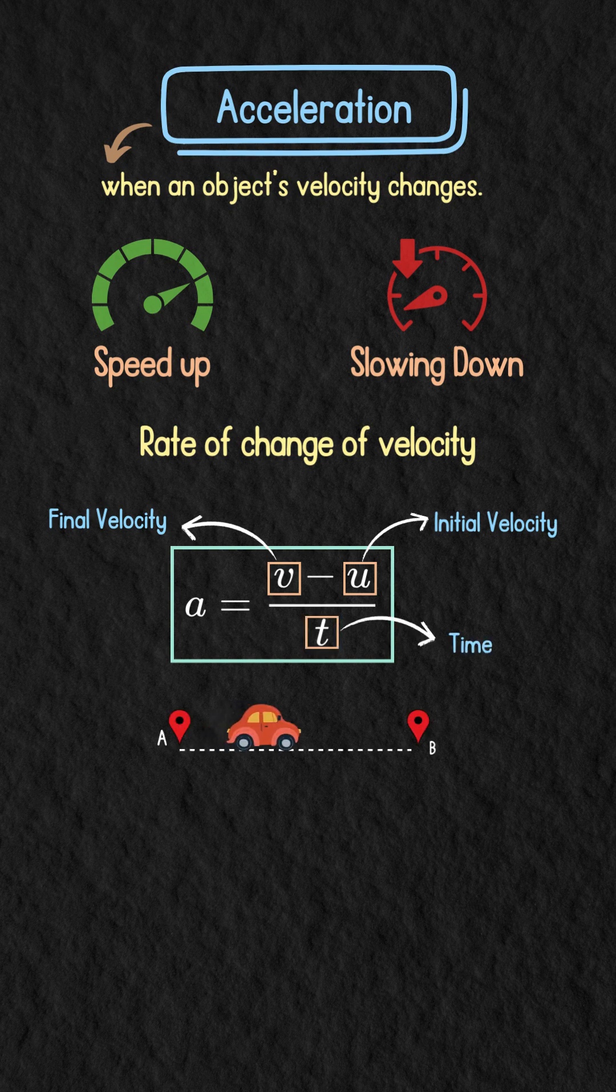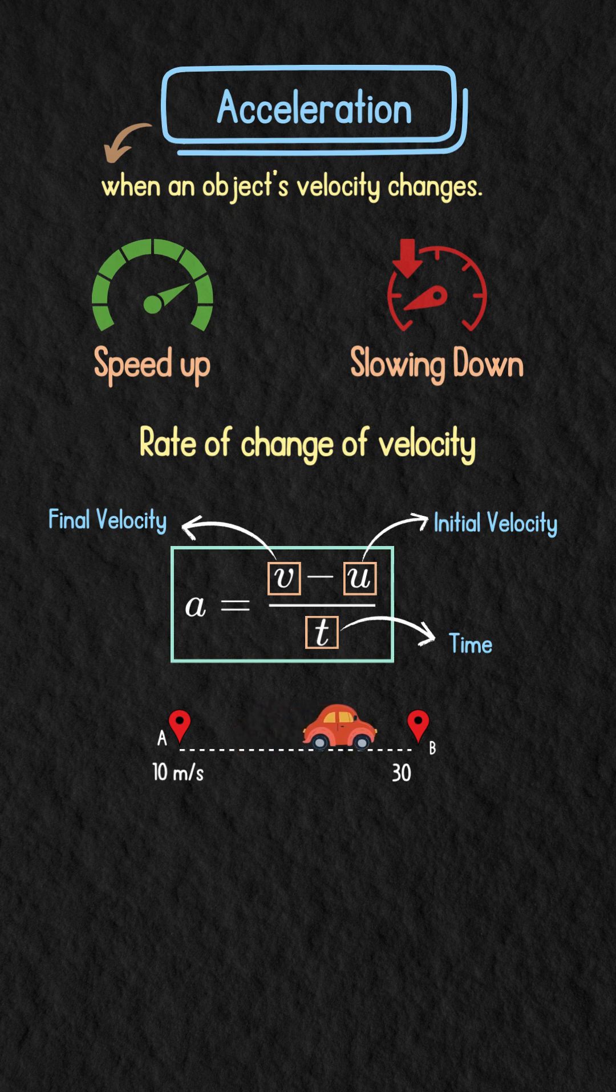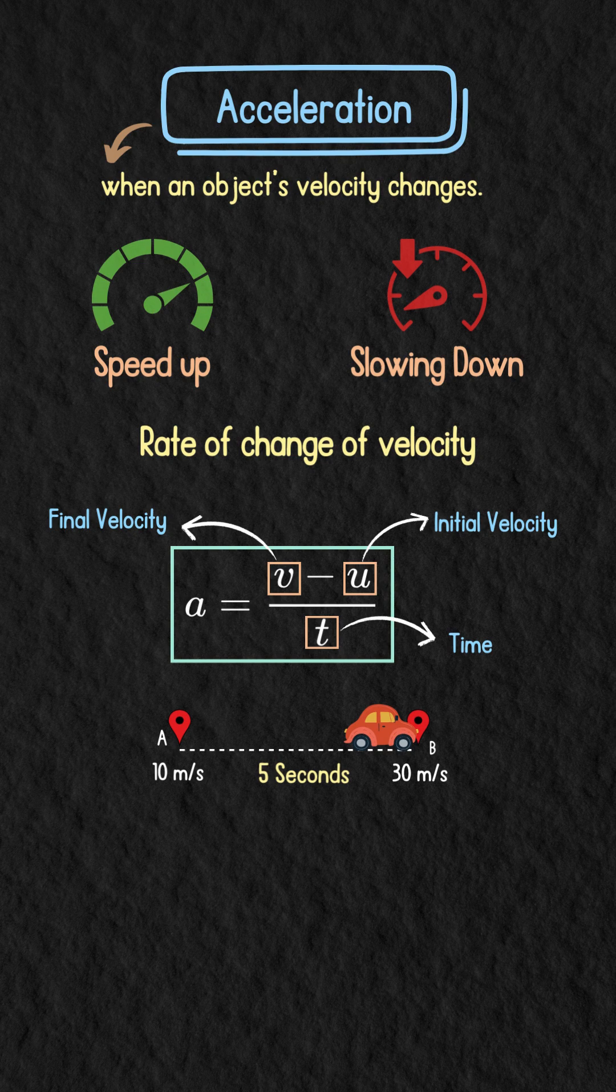For example, if a car's velocity changes from 10 to 30 meters per second in five seconds, the acceleration comes out to 4 meters per second squared.